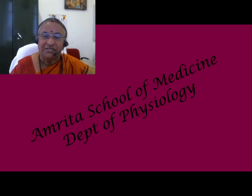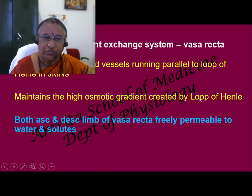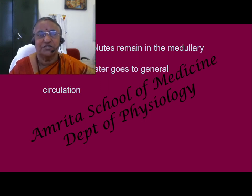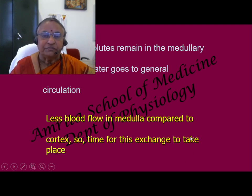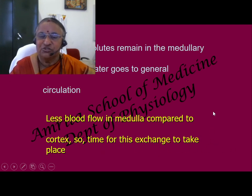So that is the functioning of the vasa recta as a counter current exchange system. It maintains the high osmotic gradient that was created by the loop of Henle. To sum up: the counter current multiplier system is the loop of Henle, and the counter current exchange system is the vasa recta. Because of the special permeability of these two structures, solutes put in by the multiplier system remain in the interstitium, whereas water which enters to dilute it is taken away into the general circulation. All this is possible because of the slower blood flow in the medulla — the corticomedullary difference in blood flow — which provides sufficient time for the exchange to take place.